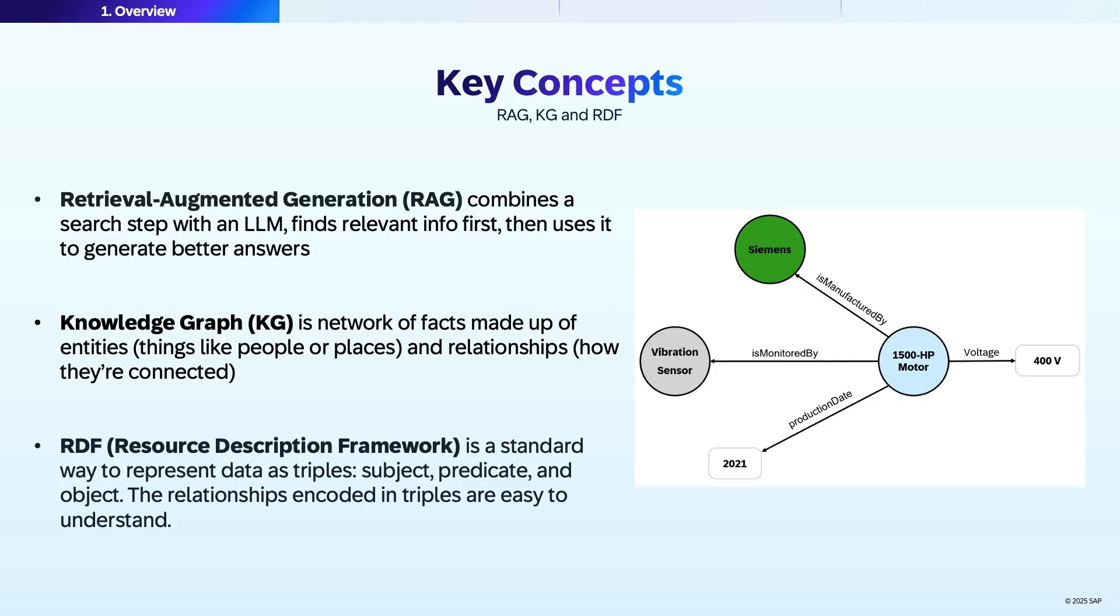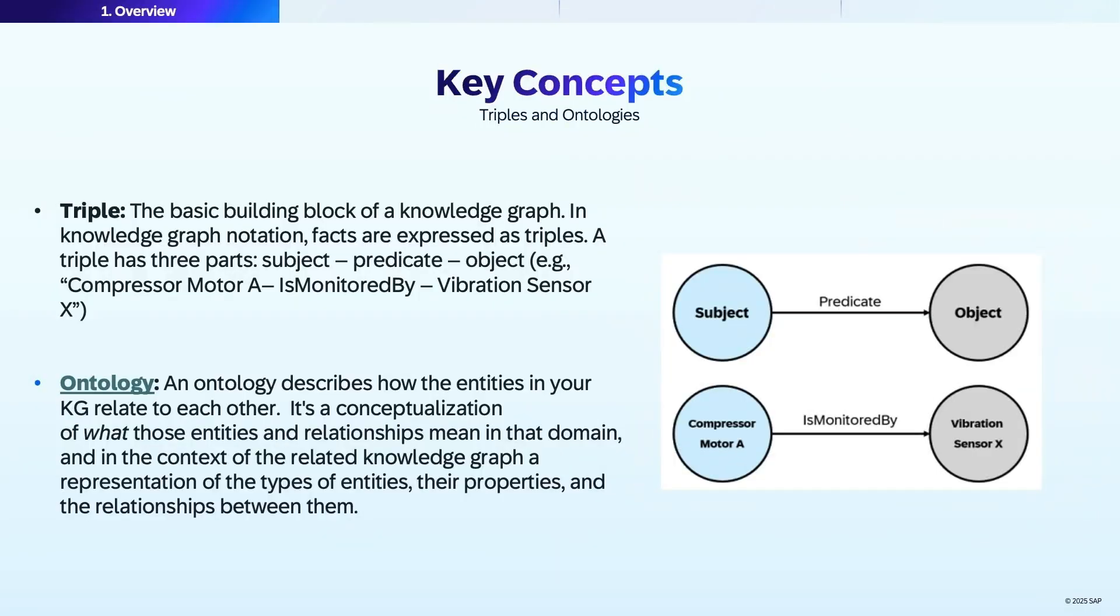A knowledge graph is a network of facts made up of entities, things like people or places, and their relationships, or how they're connected. Resource Description Framework, or RDF in short, is a standard way to represent data as triples: subject, predicate, and object. The relationships encoded in triples are easy to understand. Triples are the basic building block of a knowledge graph.